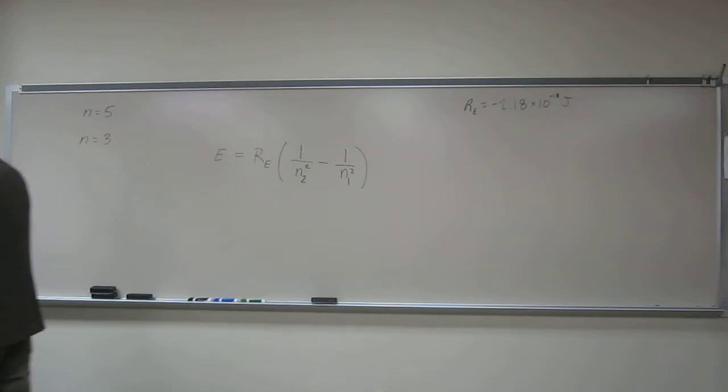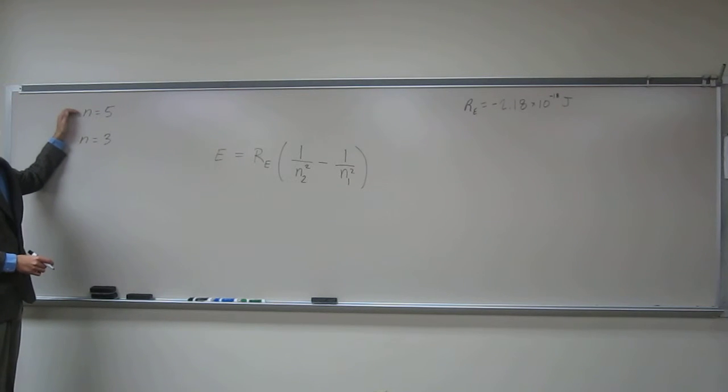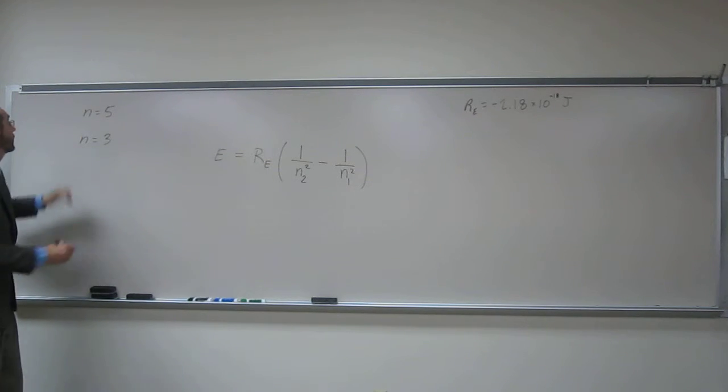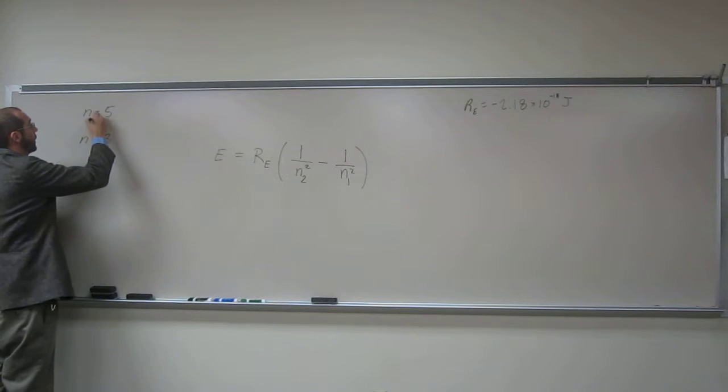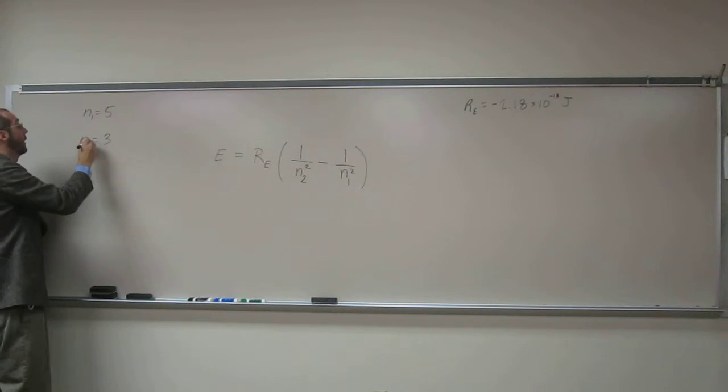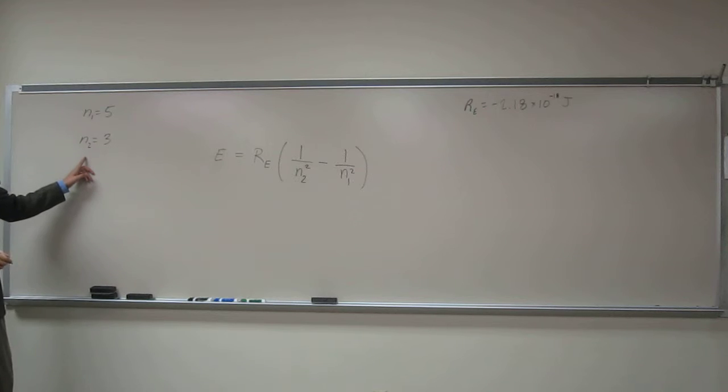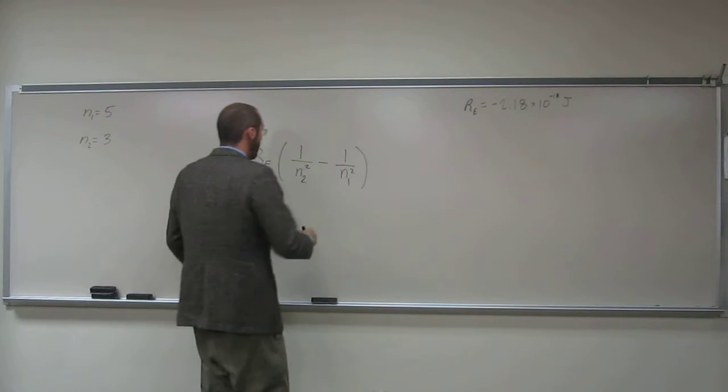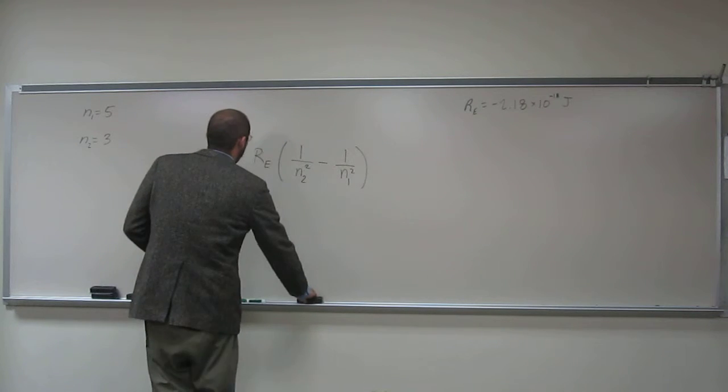So, hopefully you realize what's going on here. It said that the transition was from N equals 5 to N equals 2, right? In this case, N equals 5 is n₁ and N equals 3 is n₂, okay? So, let's just go ahead and plug those in. Let's plug everything in.